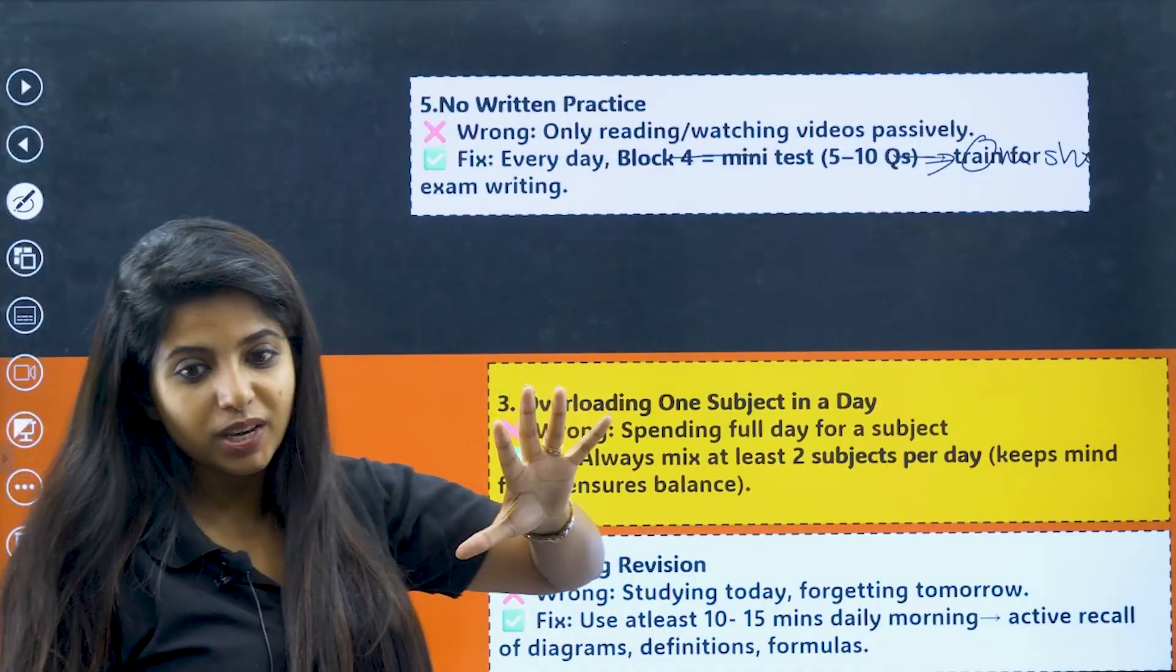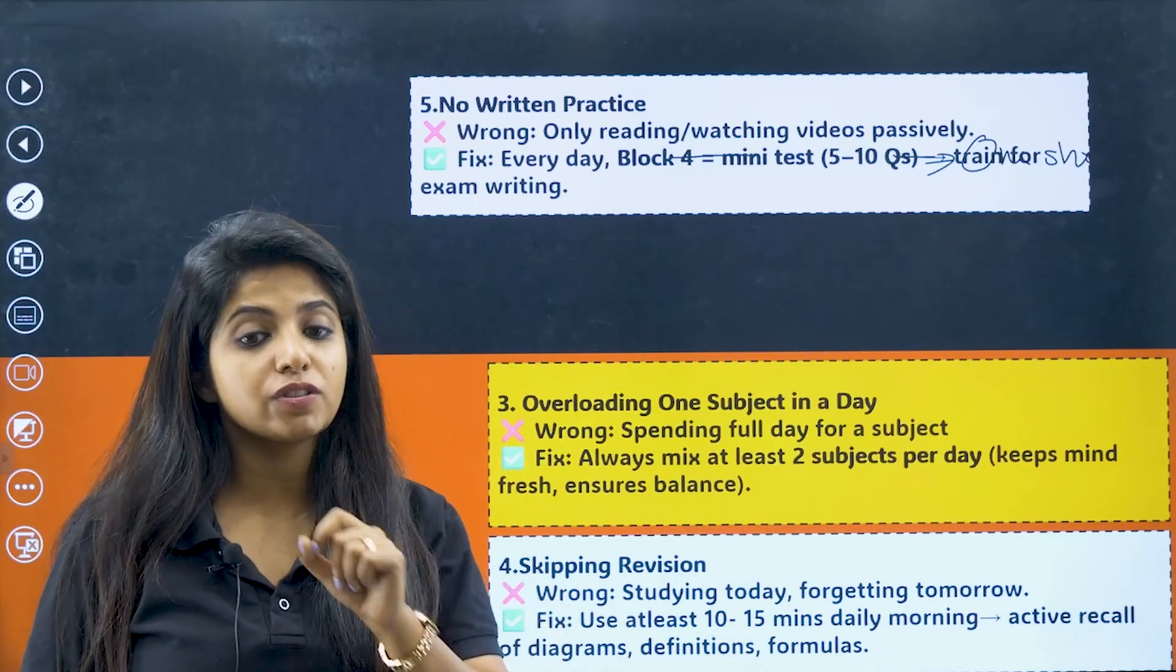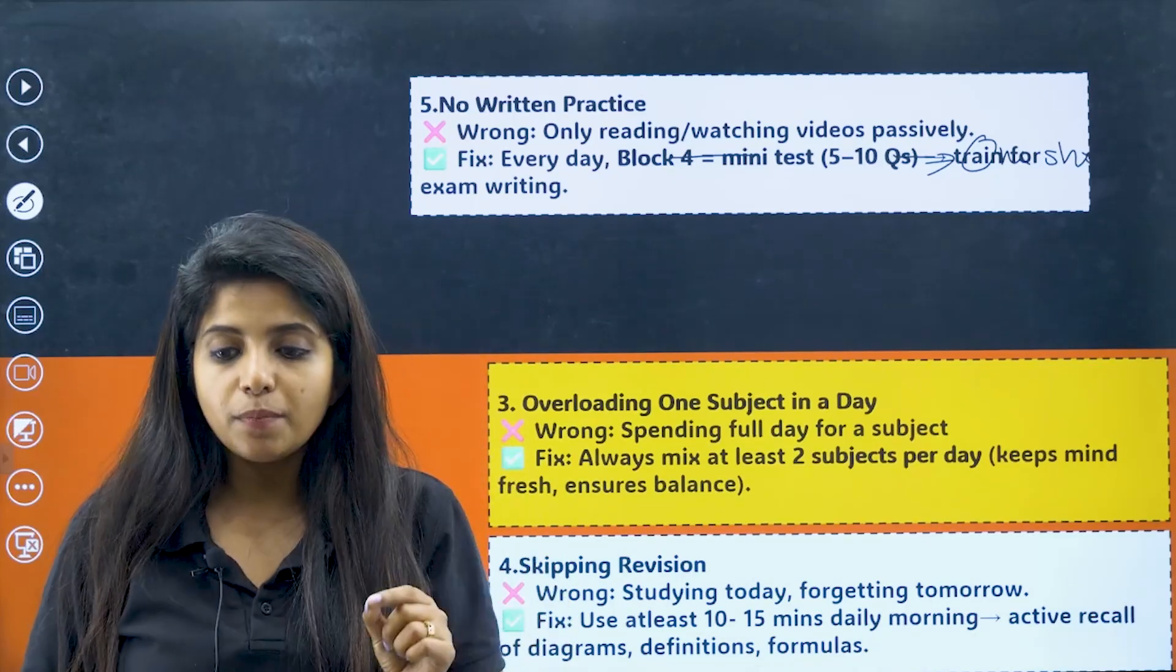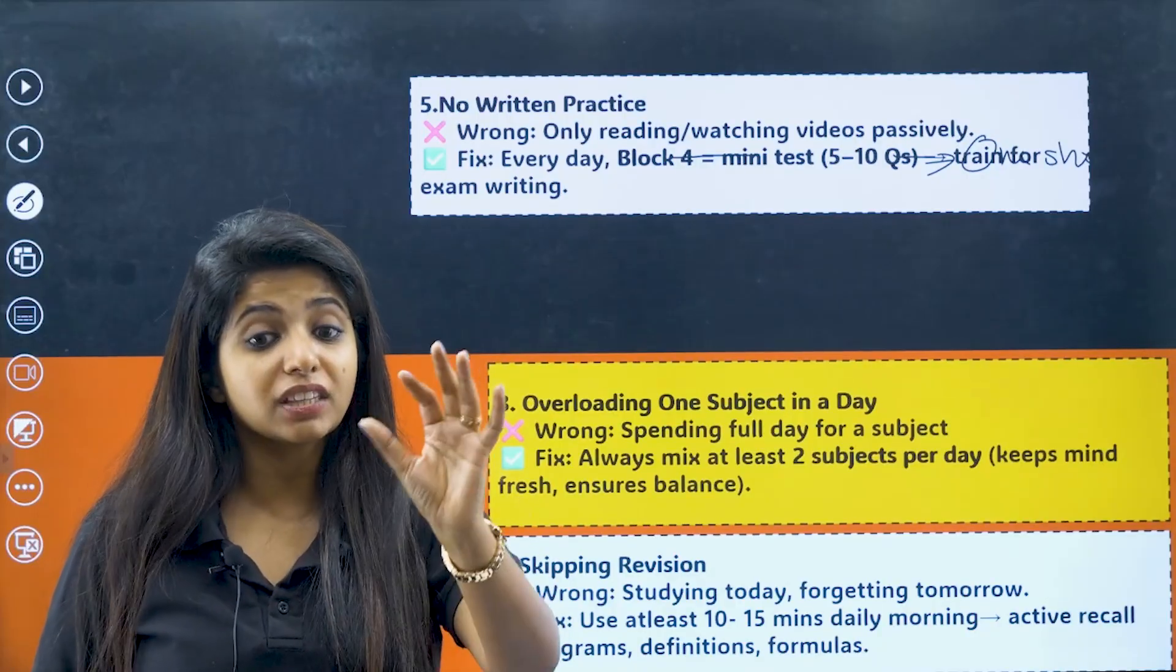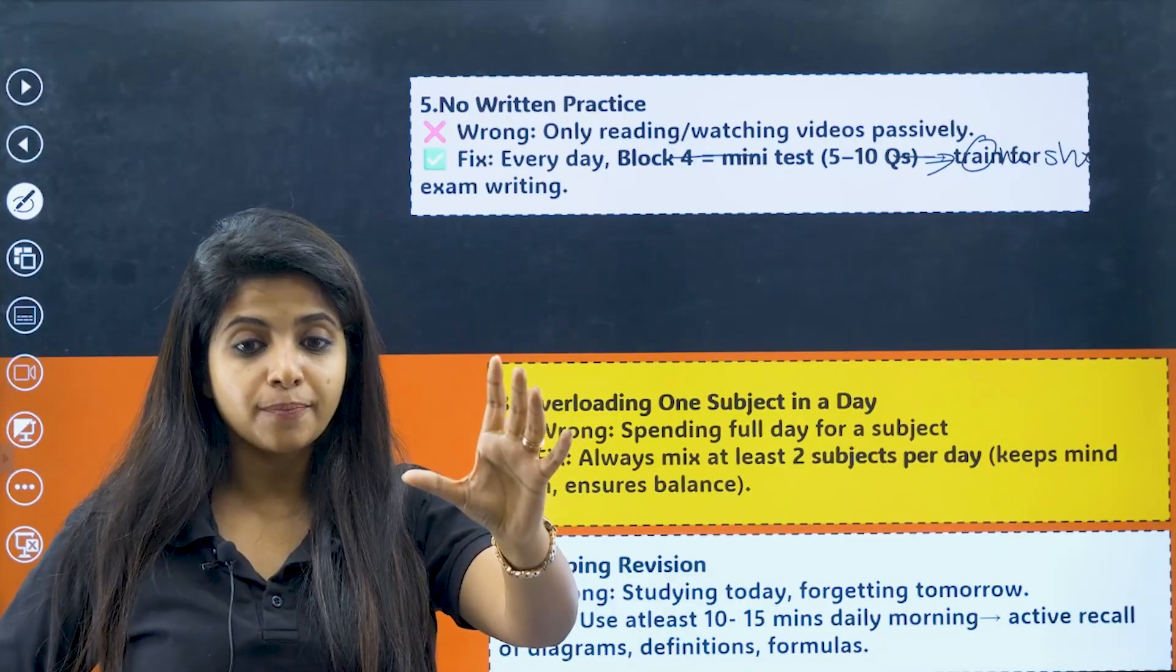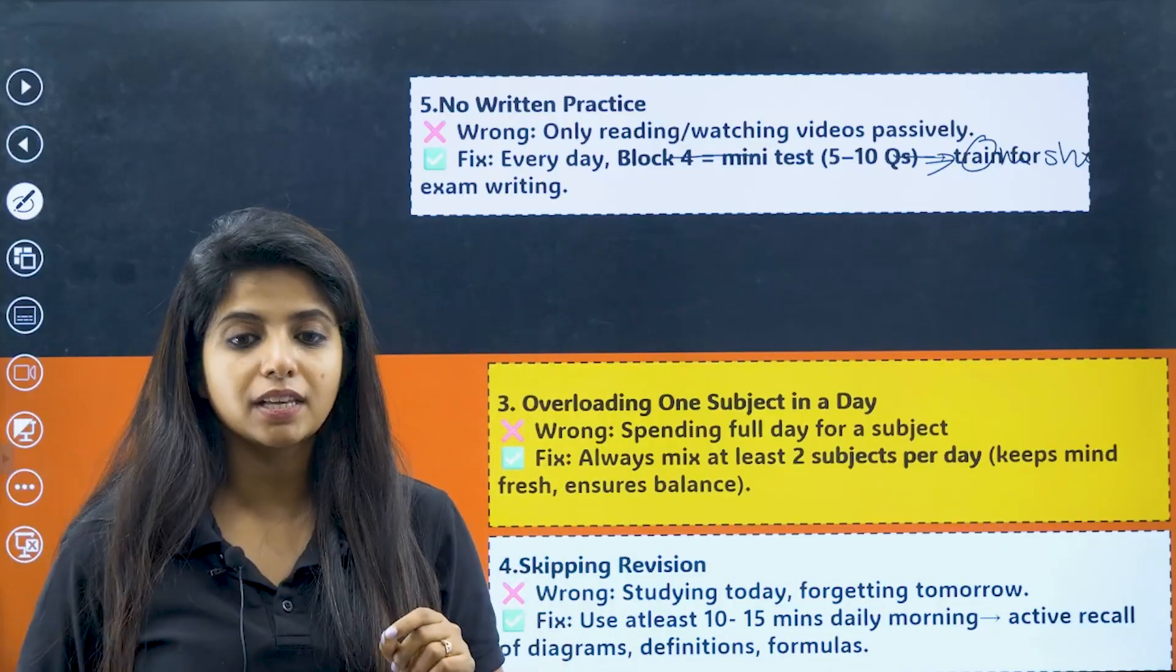Now, over here, the fifth and the second last mistake is no written practice. This is your PU-2 examination. This is not a competitive examination. When I talk about PU-2 examination, you have to make sure you are at least writing theory questions, or mathematics questions where you need step-by-step marking, things like that.